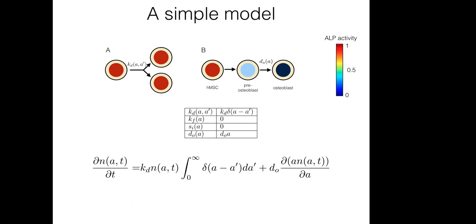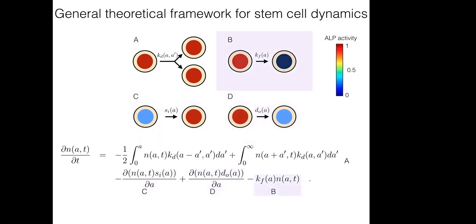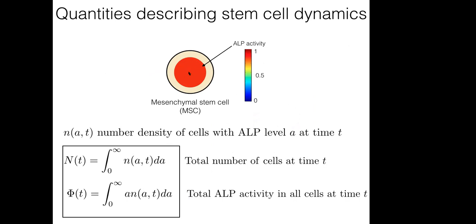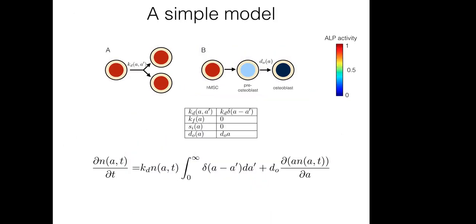Small 'a' is the ALP level of a cell — it goes from zero to one, representing how much ALP is present in a cell. The second term accounts for the outflux of ALP from a cell through slow degradation. The function chosen is d_0(a) = d_0 × a, meaning that a cell with a high ALP level will degrade faster — the degradation rate depends upon the ALP level of the cell.